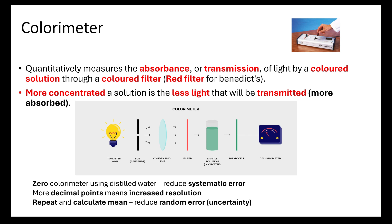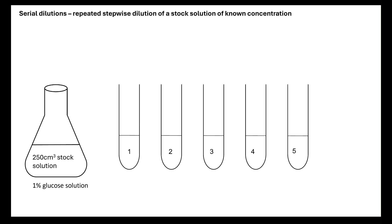If we want to do a colorimeter test, we want to do this with a known concentration of our solution. So we're going to do a serial dilution. First we're going to take 1% glucose solution and we have 250 centimeters cubed of our stock solution. We are going to repeat a dilution to get known concentrations. We're going to take 1 centimeter cubed of our stock solution and add 9 centimeters cubed of distilled water. I therefore have 1 going in of stock divided by the total volume which is 10. I therefore have a 0.1% glucose solution in test tube 1. That is what we call a 10-fold dilution.